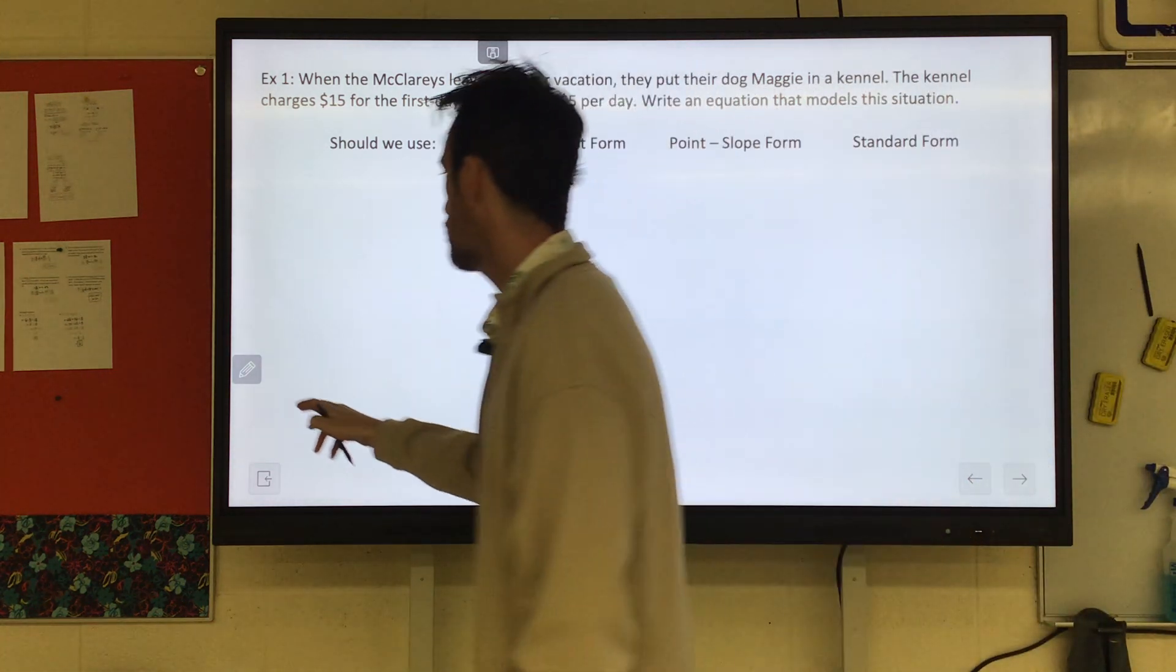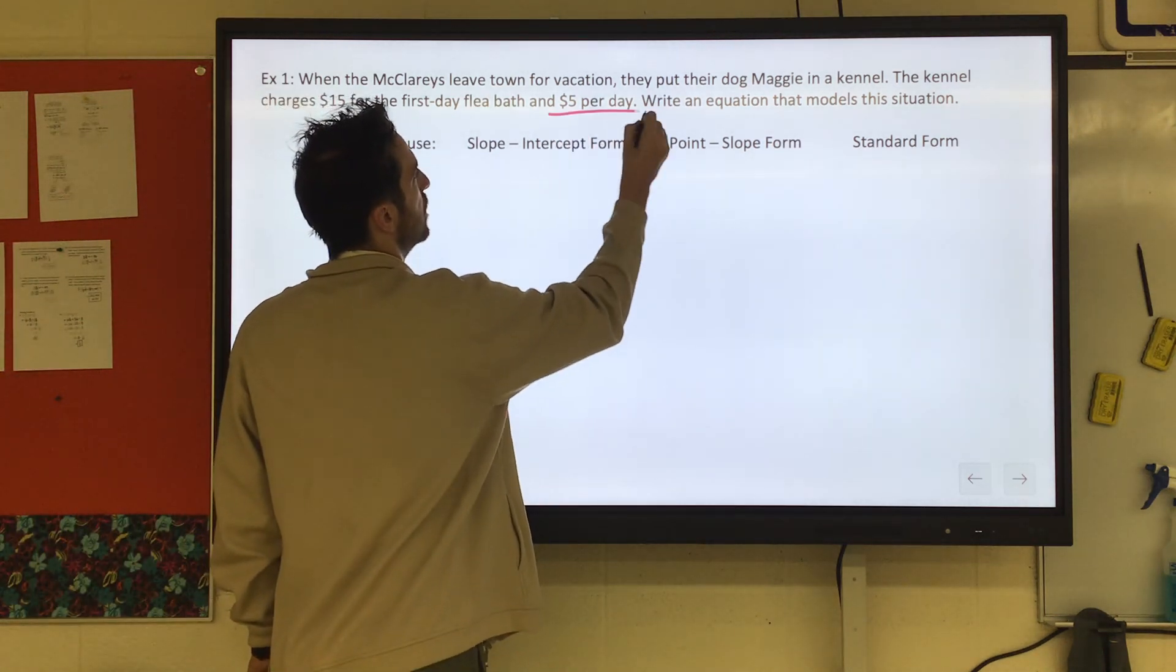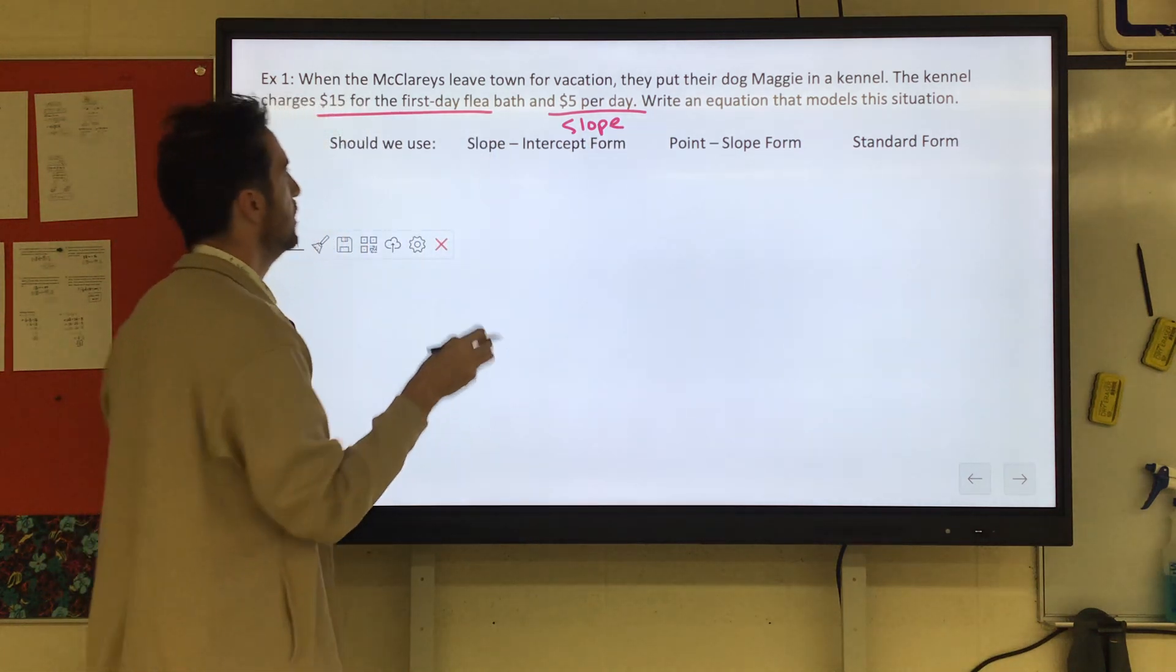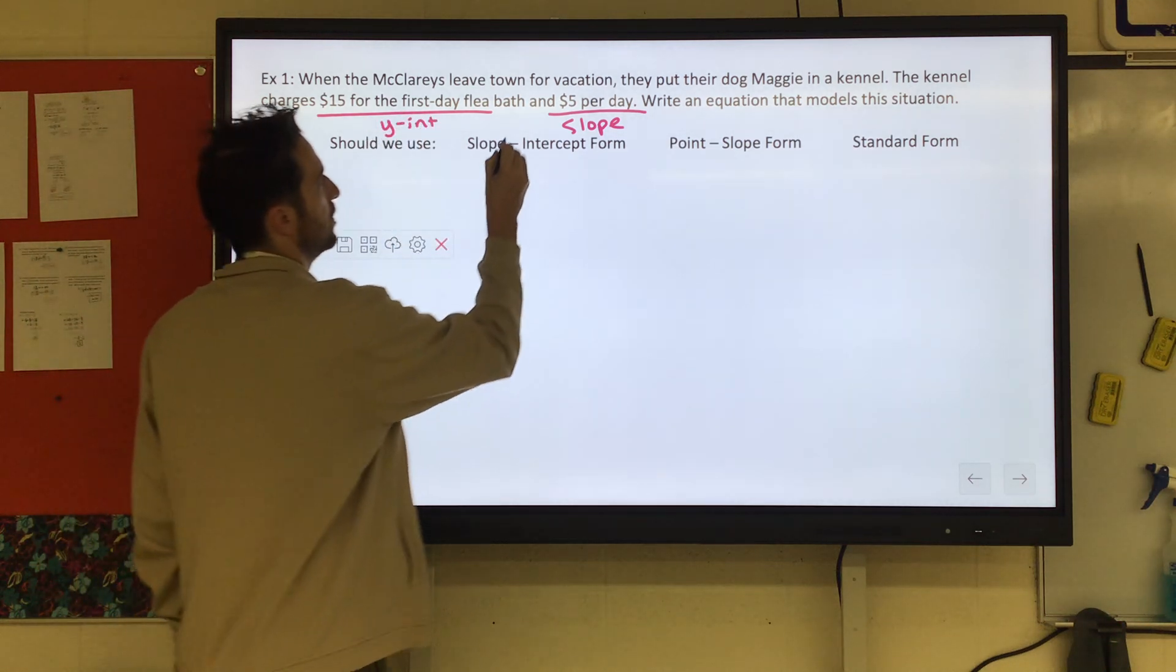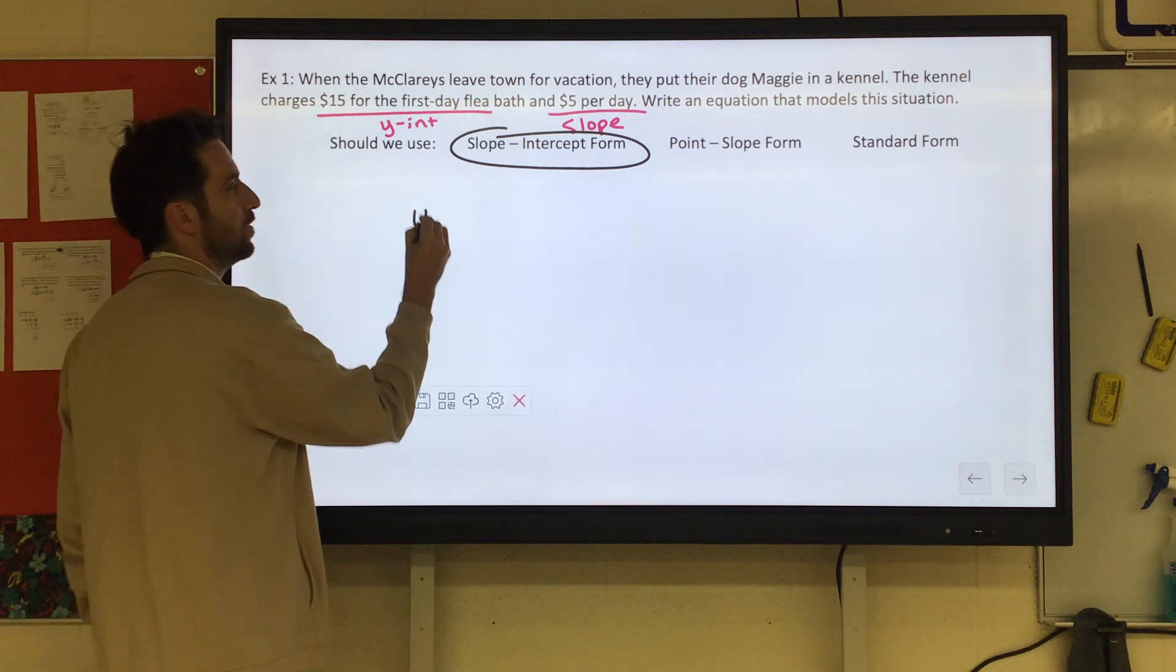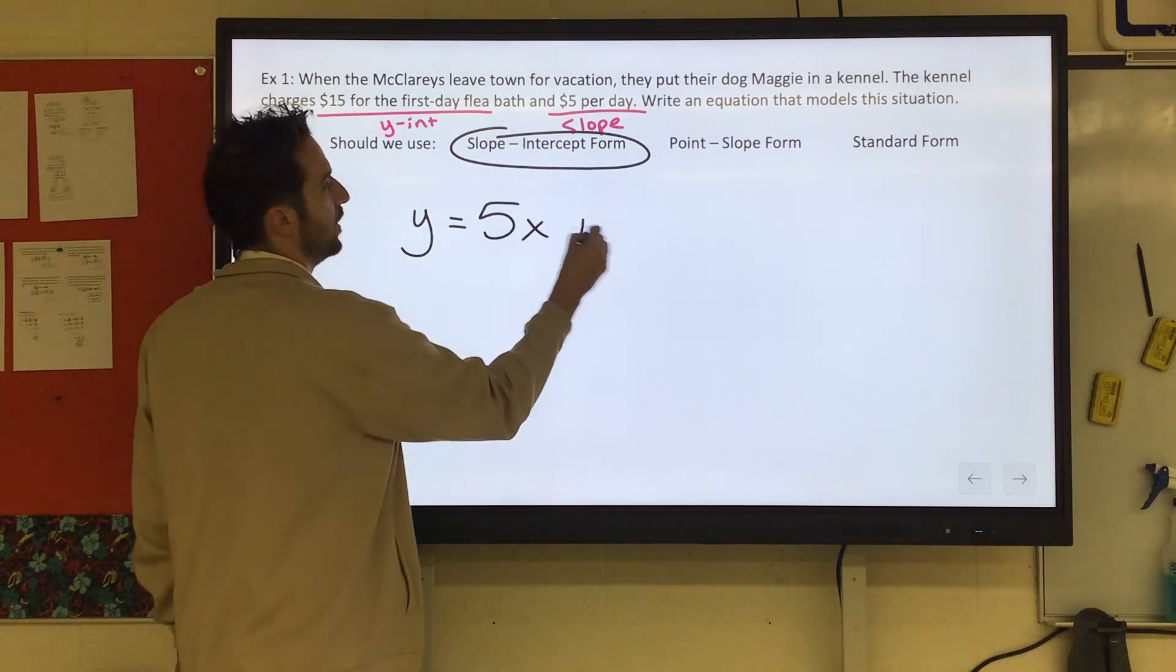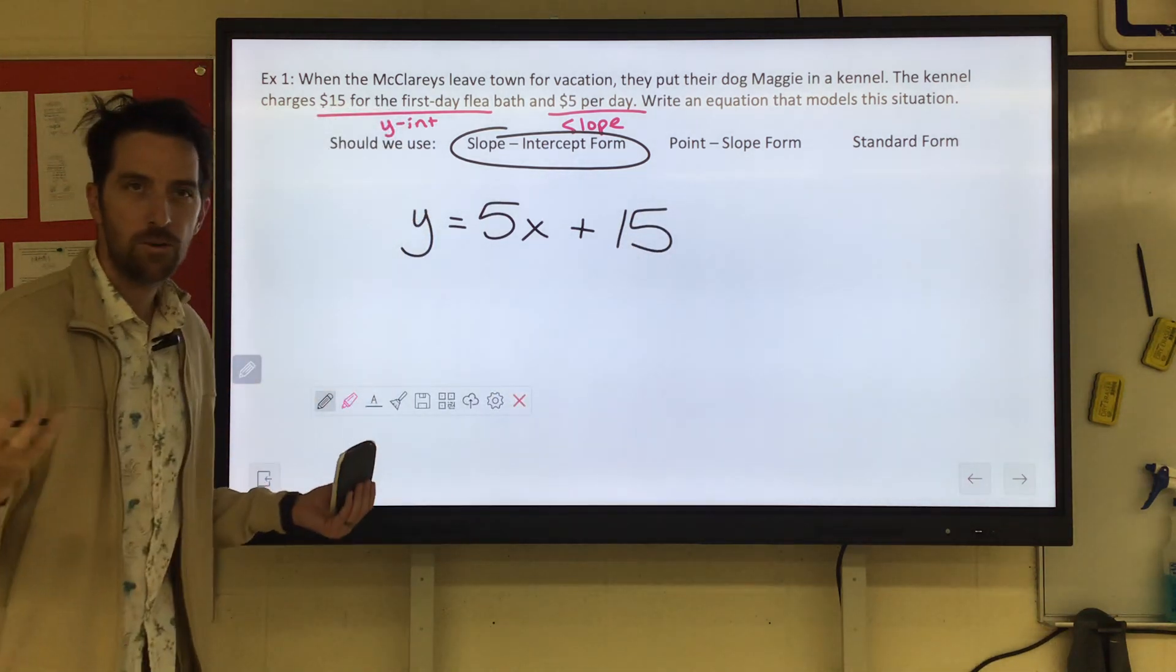The per day is like our slope. So they gave us a slope. And this $15, you only have to pay it one time. It's a fixed amount. So this would be like our y-intercept. So we're going to put this in slope-intercept form. Now writing that out, y equals mx plus b. The slope is $5 per day, plus we also have to pay for that $15 flea bath on day one.